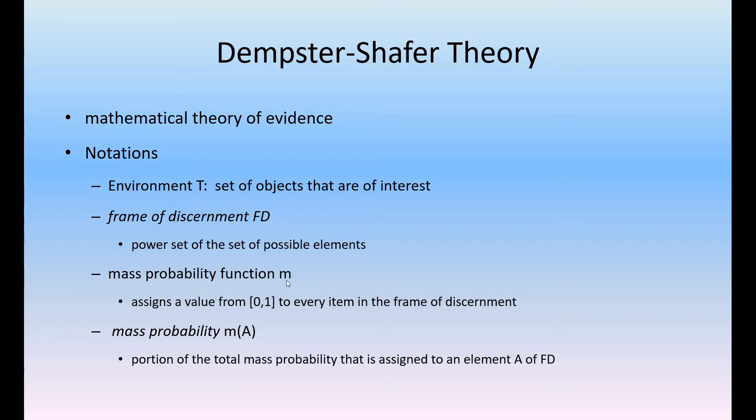The probabilities can be described with the help of this frame of discernment and some mass probability function which assigns a value from the interval 0 to 1, and mass probability m of A is the portion of total mass probability that is assigned to an element A of FD.